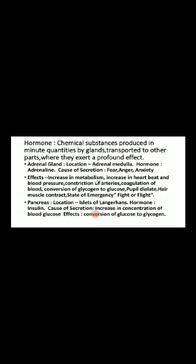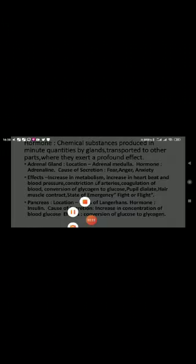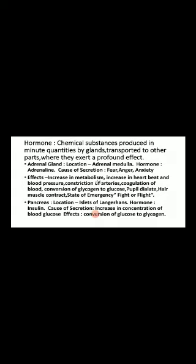Now, the adrenal gland. Dear students, we have to study these two glands only, which are described in the Cambridge syllabus — one is the adrenal gland and the other is the pancreas. The adrenal gland is located on top of the kidney. They are a paired structure — two in number — present on top of the kidney. They produce a hormone called adrenaline. The cause of secretion of this hormone is fear, anger, and anxiety.